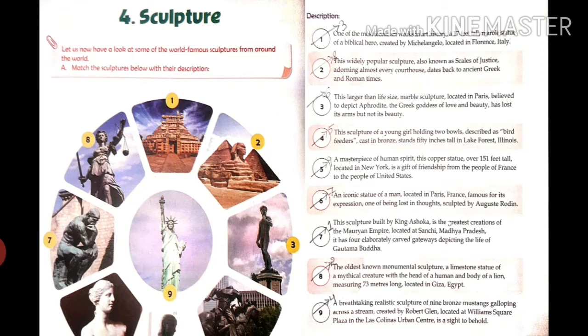The oldest known monumental sculpture: a limestone statue of a mythical creature with the head of a human and the body of a lion, measuring 73 meters long, located in Giza, Egypt. This description is related to the second picture.